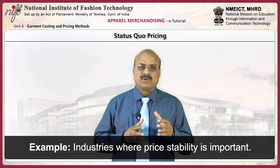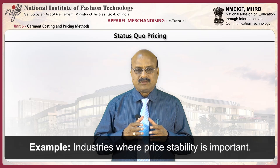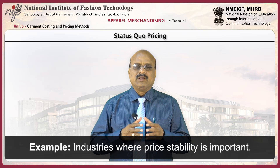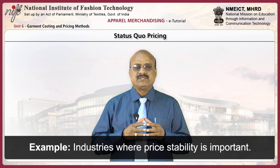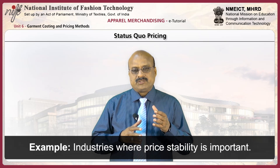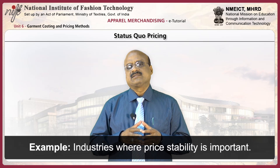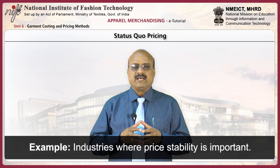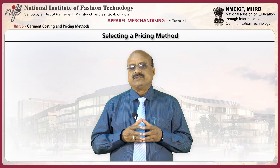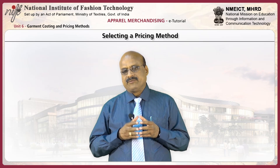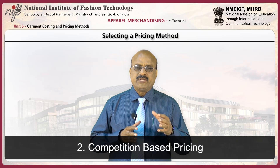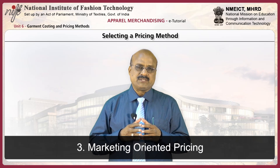This is especially true in industries where price stability is important. If a firm can maintain its profit or market share simply by meeting the competition — charging about the same price as competitors for similar products — then it will do so. There are three pricing methods that can be employed by a firm: cost-oriented pricing, competition-based pricing, and market-oriented pricing.